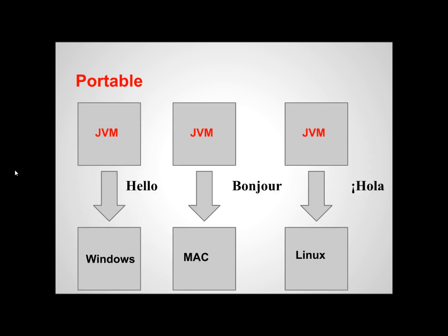You may have noticed when first downloading Java there are different versions for each major operating system. You can think of these as different translators for each operating system — for example, a Windows translator and a Linux translator. This provides great flexibility for developers because if the code compiles and runs on one machine, it will compile and run on any other machine with Java installed.